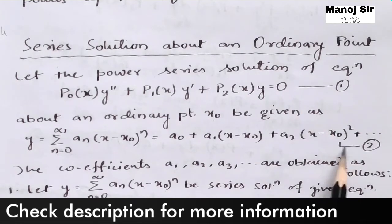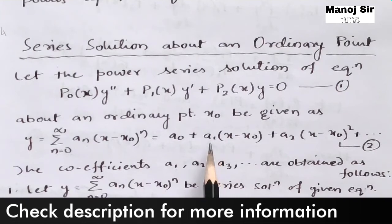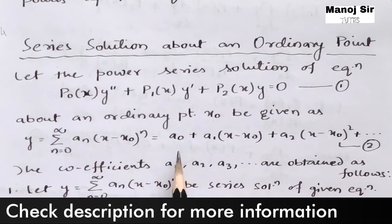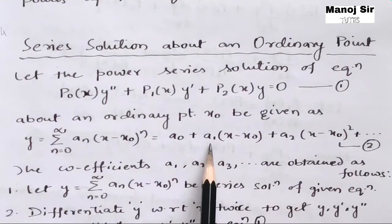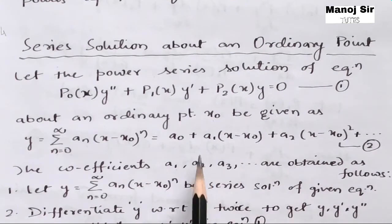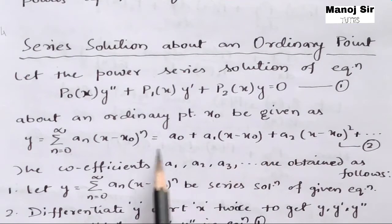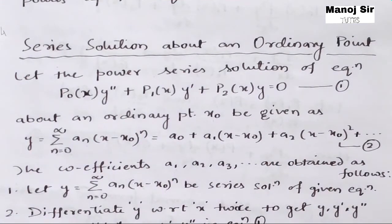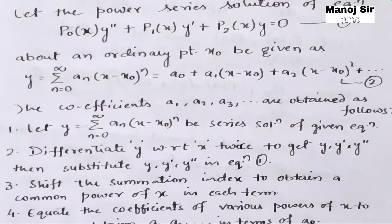Now we need to find the coefficients a1, a2, a3, and so on in terms of a0. Once we find these values, we simply substitute them back into equation (2), and that y will be our solution to the power series equation.